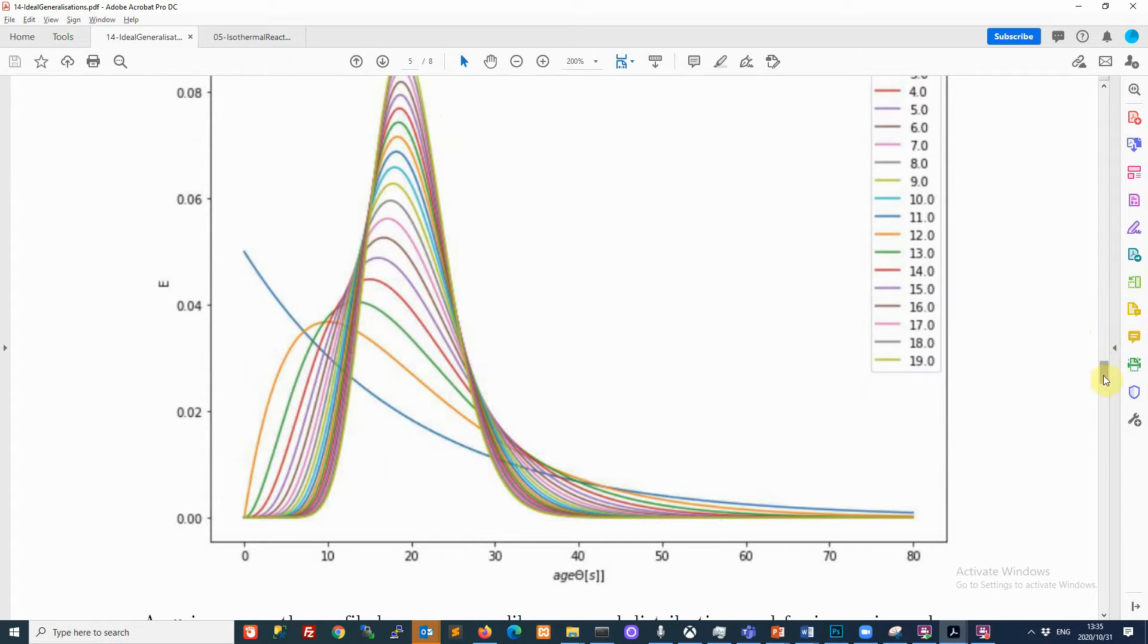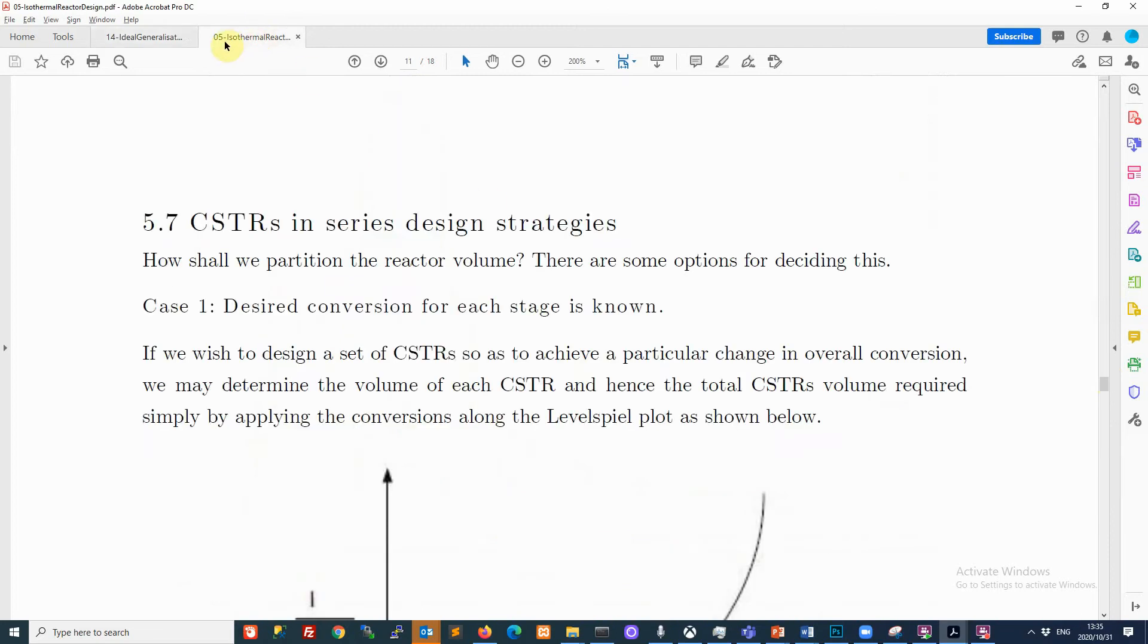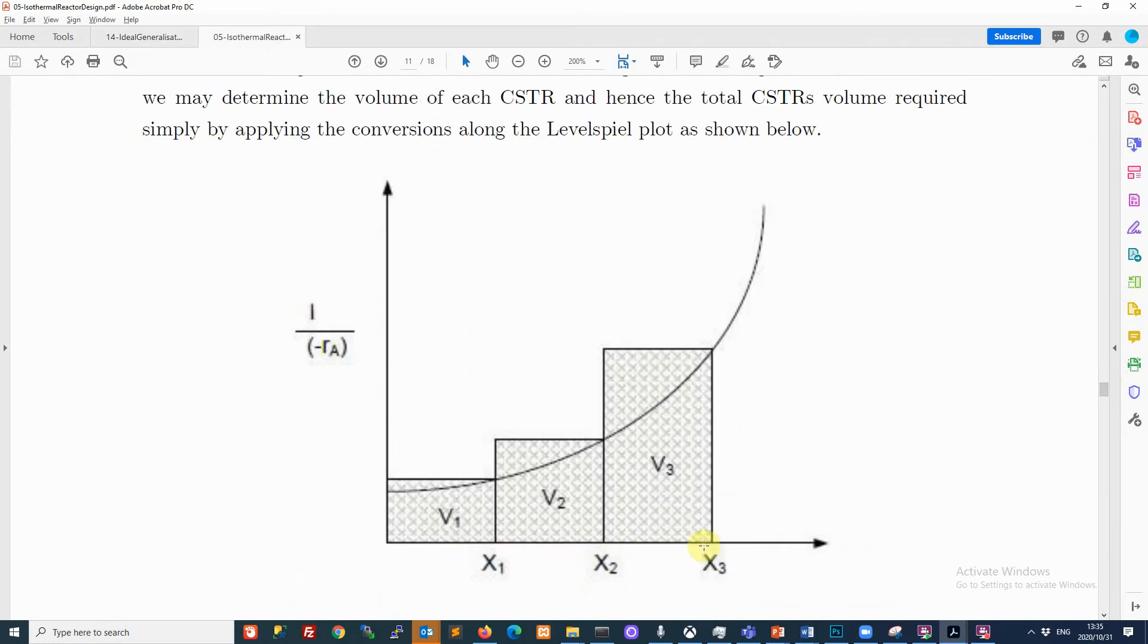Another way to see this is by referring back to notes 05 where we were looking at the Levenspiel plots. Remember if we were considering some overall conversion shown here by x3, the CSTR would show up here in this block. But as we partitioned the volume, and let's say here we took three partitions, then we had a reduced required volume because we were moving closer and closer to this curve. As you keep increasing n again you get closer and closer to the curve. You get closer to just the area under this curve. In other words you get closer and closer to the volume of a PFR. Once again, as you increase n you are becoming closer and closer to plug flow-like behavior.